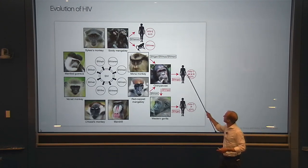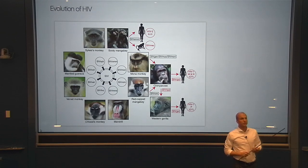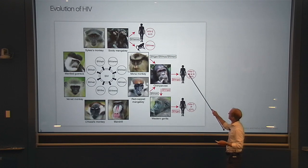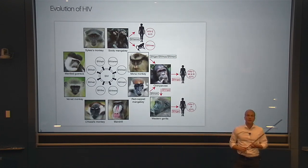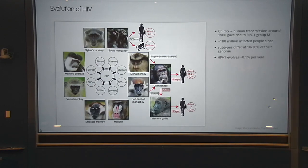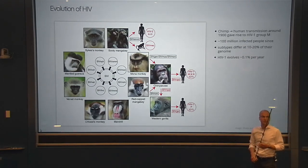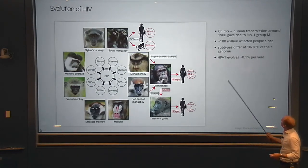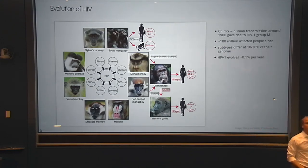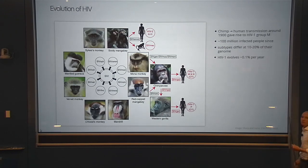The most consequential transmission is from chimpanzees to humans. There were actually several, but the most consequential gave rise to what's called HIV group M, which probably happened around 1900, give or take a couple of decades. This one transmission has resulted in on the order of 100 million infections over roughly 100 years.